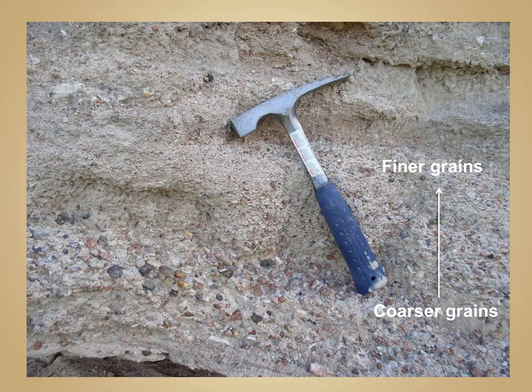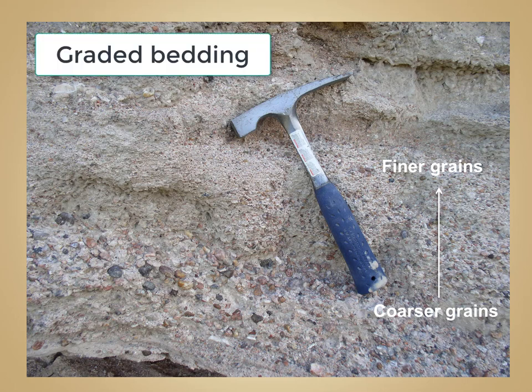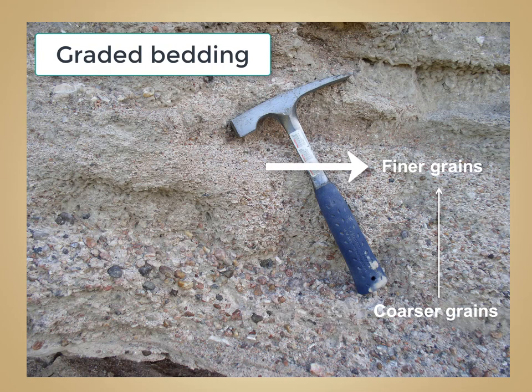Another type of sedimentary structure often found in beds of sedimentary rock is known as graded bedding. In graded bedding, there is a vertical change in the sedimentary particle size — typically coarse grains at the bottom, progressively fining upwards to more fine grain towards the top. This forms as sediment is deposited by a gradually slowing current; as a river or stream current begins to slow down, more coarse-grained particles are deposited first, followed by the more fine-grained second.